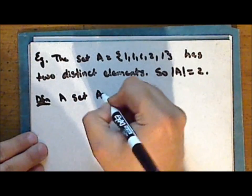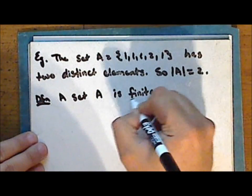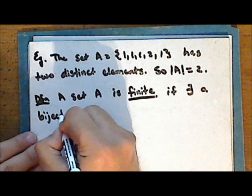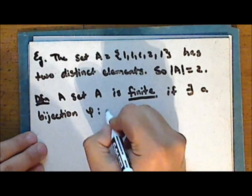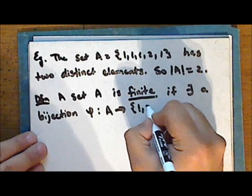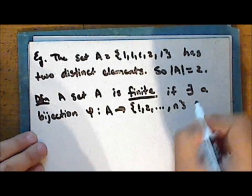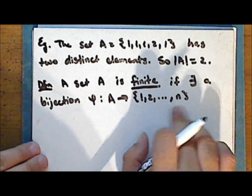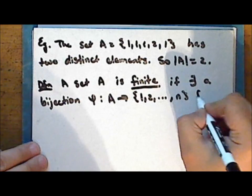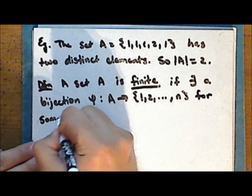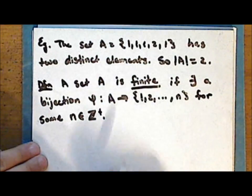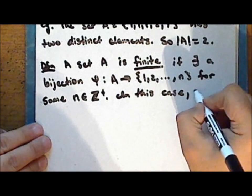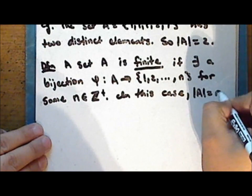A set A is finite if there exists a bijection phi from the set A into a terminating subset of the positive integers — that is, a set beginning with 1 and continuing to some positive integer n. In this case, the cardinality of the set A is that finite number n.